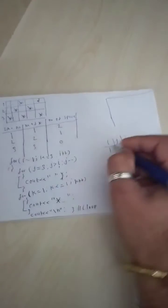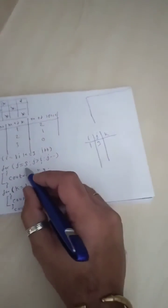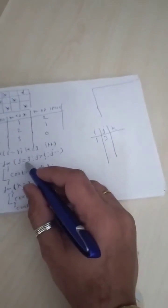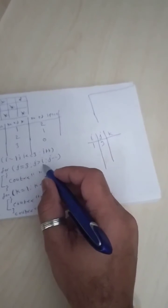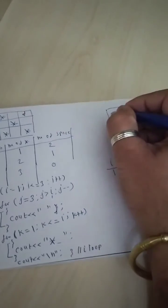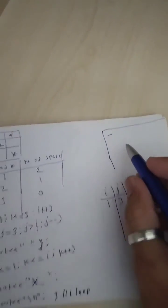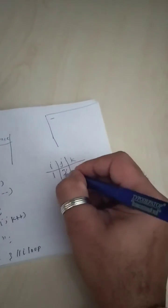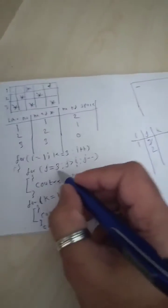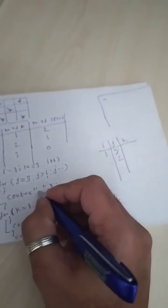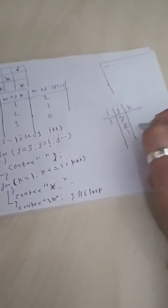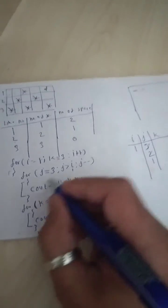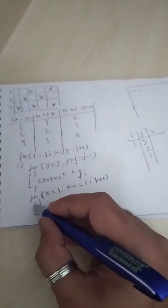i equals to 1, so J equals to 3. Since J equals three and three is greater than one, condition true — one space is printed. Then J is updated: J becomes two. Two is greater than one, condition true — one more space is printed. Then J becomes one. Is one greater than one? No — so this loop ends. Two spaces have been printed for line one.